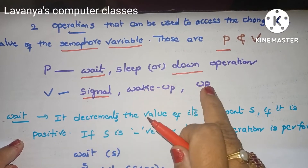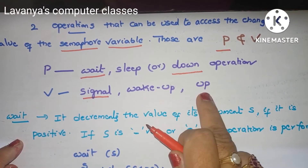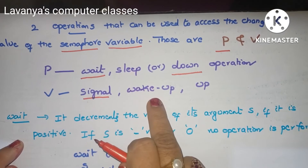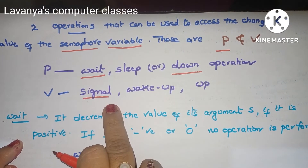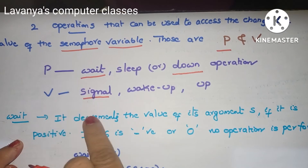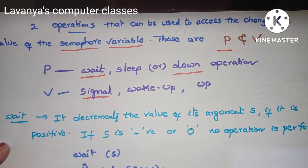The V operation is also known as signal, wake up, or up — opposite of down. So P is wait/sleep/down, and V is signal/wake up/up. These are the two operations performed in semaphores.